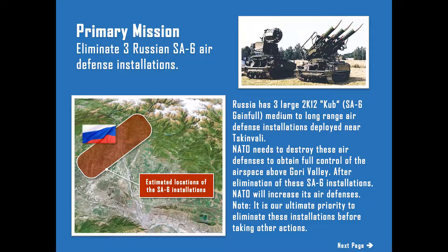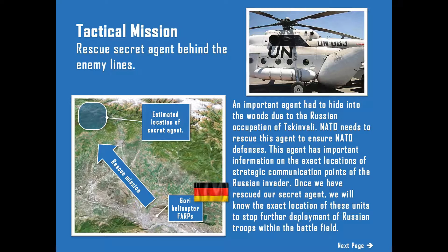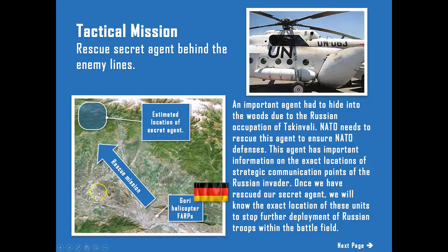Seeding will not be easy because the SA-6 and all other SAMs have SEAD evasion equipment and capabilities. The tactical mission to rescue the secret agent is quite tricky — you'll be guided by two Apache helicopters taking a route through the enemy zone. As a transport helicopter you need to follow those Apaches behind enemy lines to rescue the agent. You also need to command those helicopters using the escort functionality of MOOSE — commanding them to attack, defend, or explore outstanding targets.